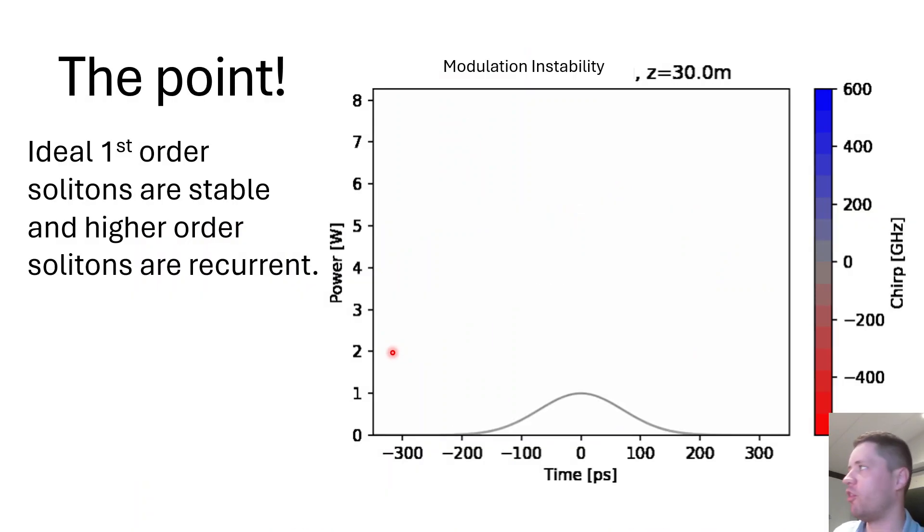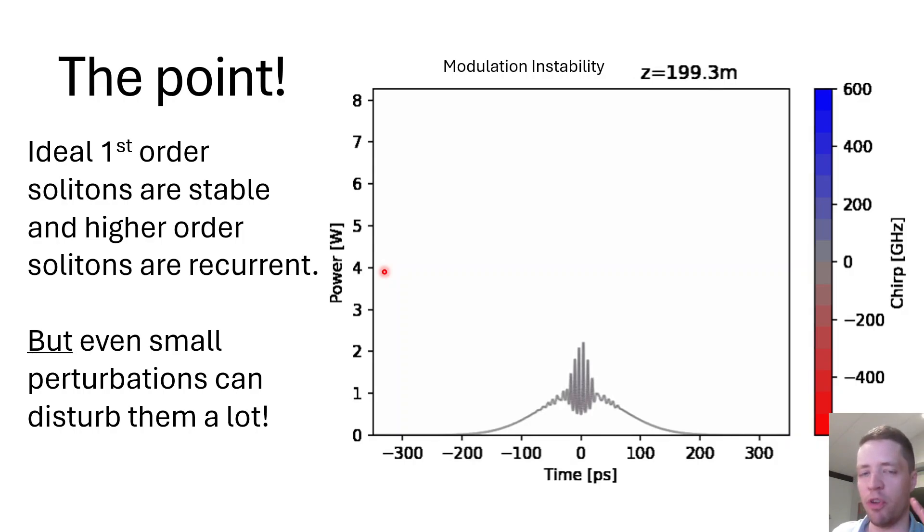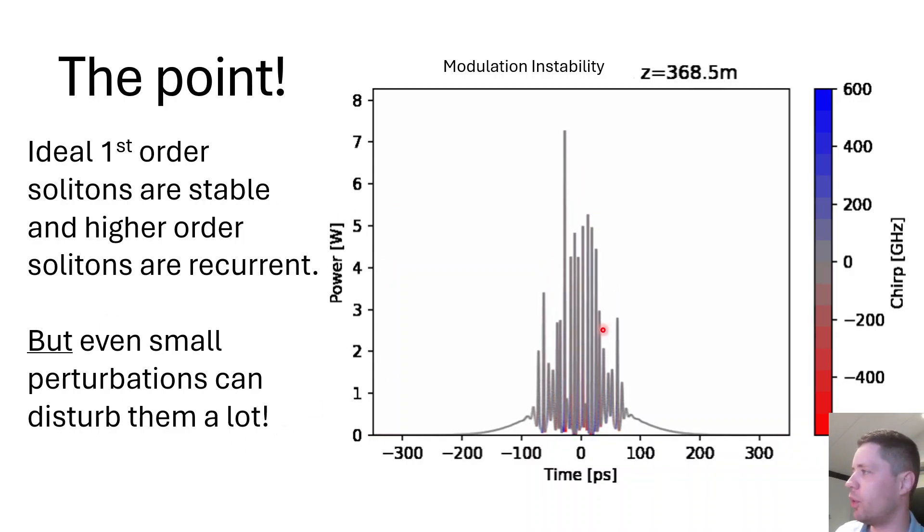So anyway, what's the point of all this? Well the point is that solitons in some sense seem to be very stable and very predictable behaviors of pulses inside of fibers, but in reality they're only a very special case that can be stable when no other disturbances are present. We saw here that both the presence of third order dispersion and Raman and self-steepening are actually enough for the pulses to break down after a short amount of propagation.